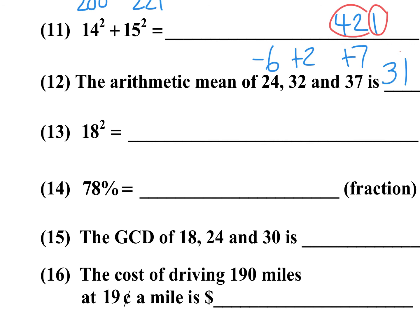Number 13: What is 18 squared? 324 — memorize that one, you'll see it quite a bit. Number 14: 78% as a fraction is 78 over 100, reduced by 2, that's 39 over 50.